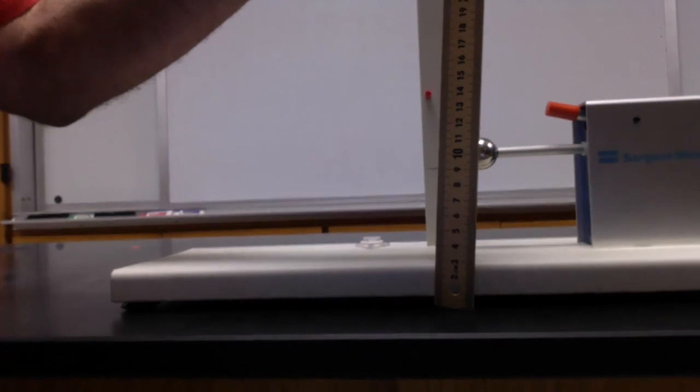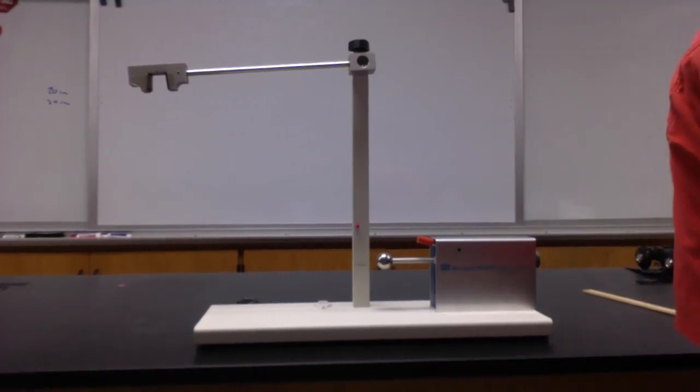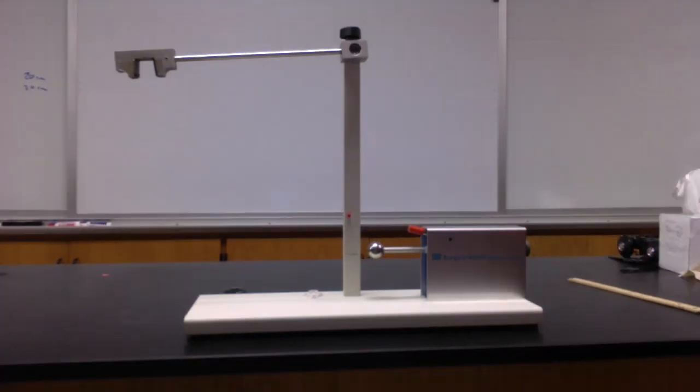I get about 8.8 centimeters. Now you can compare the velocity of the ball found from projectile motion to the velocity of the ball found using the ballistic pendulum. Can you explain why there's a difference?